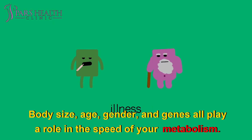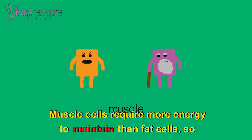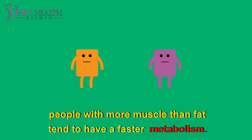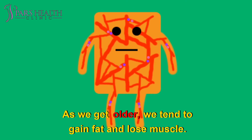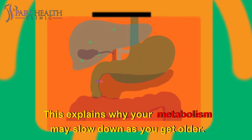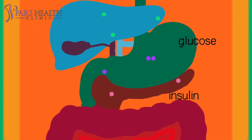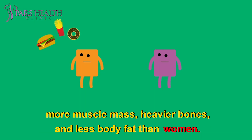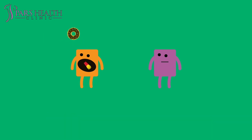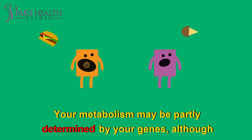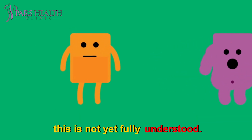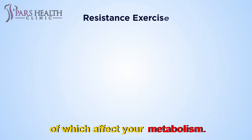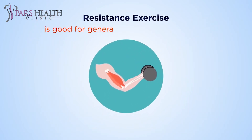Do some people have a faster metabolism than others? Body size, age, gender, and genes all play a role in the speed of your metabolism. Muscle cells require more energy to maintain than fat cells, so people with more muscle than fat tend to have a faster metabolism. As we get older we tend to gain fat and lose muscle, which explains why your metabolism may slow down with age. In general, men tend to have a faster metabolism because they have more muscle mass, heavier bones, and less body fat than women. Your metabolism may be partly determined by your genes, which play a role in muscle size and your ability to grow muscles.